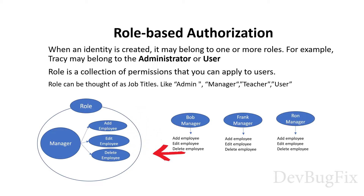Let's suppose we want to remove the delete permission from Ron, but Bob and Frank can still delete the employee. If we remove the permission from the manager role, then all of them will lose this permission. So we cannot customize permissions in role based authorization, but we can do so in claim based authorization.